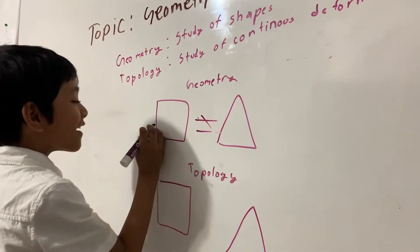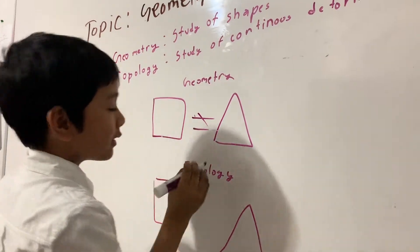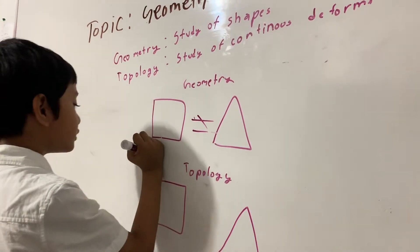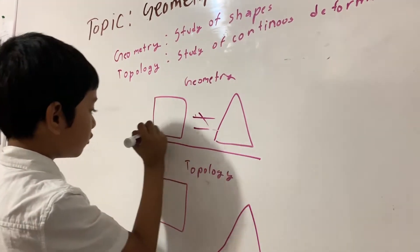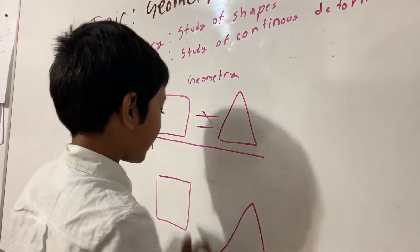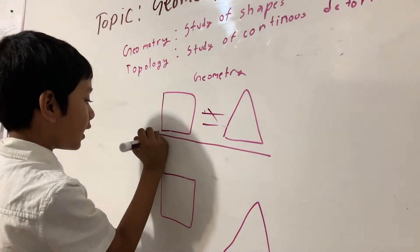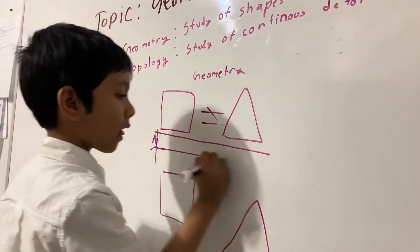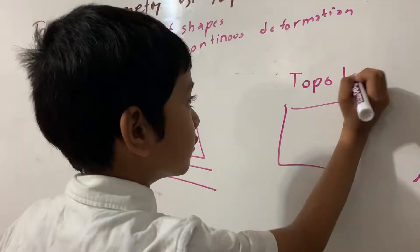In geometry, shapes depend on two things: area and perimeter.